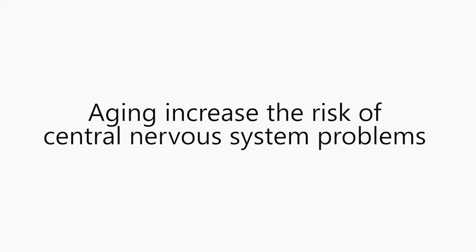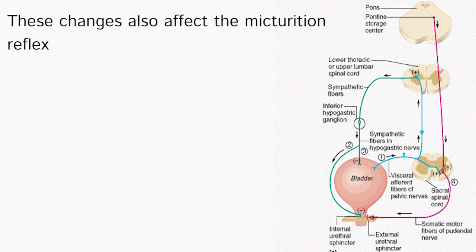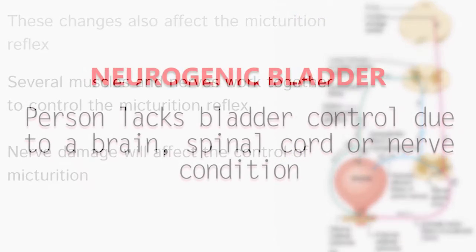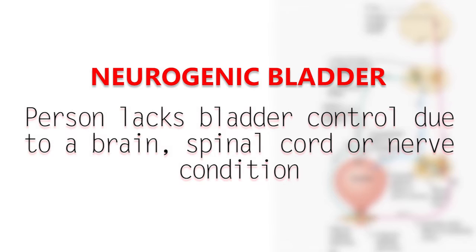Aging also increases the risk of central nervous system problems such as Alzheimer's disease, Parkinson's disease, and stroke. These age-related changes in nerve and brain function can affect the micturition reflex, because several muscles and nerves work together for the bladder to hold urine until ready to empty. Nerve messages go back and forth between the brain and the muscles that control bladder emptying. If nerves are damaged by illness or injury, the muscles may not be able to tighten or relax at the right time — this is known as neurogenic bladder, where a person lacks bladder control due to a brain, spinal cord, or nerve condition.